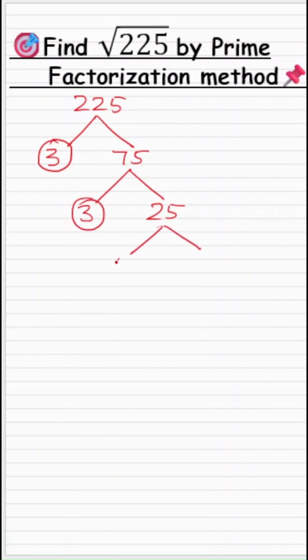Let's split 25 as 5 times 5, and we know that 5 is also a prime number. So now 225 can be written as the product of 3 times 3 times 5 times 5, and we know that all these are the prime factors and hence the method is called prime factorization method.